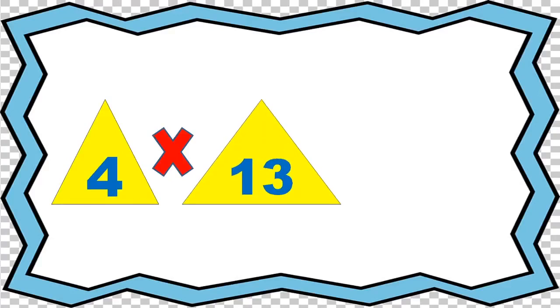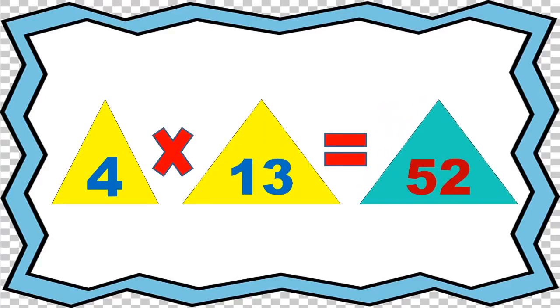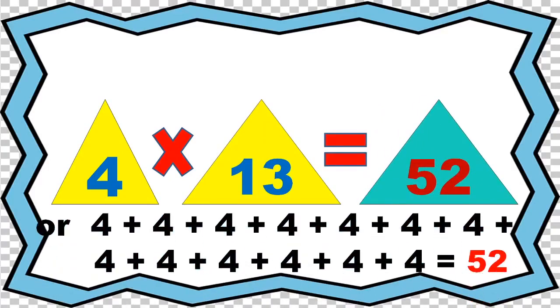4 times 13 equals 52, or 4 plus 4 plus 4 plus 4 plus 4 plus 4 plus 4 plus 4 plus 4 equals 52.